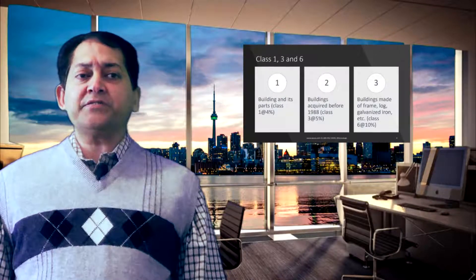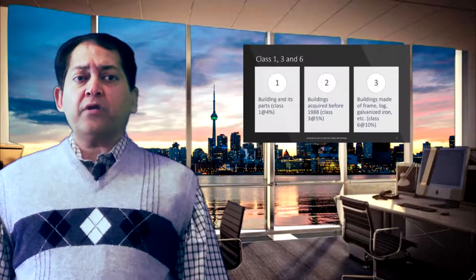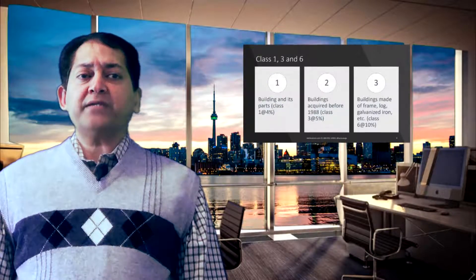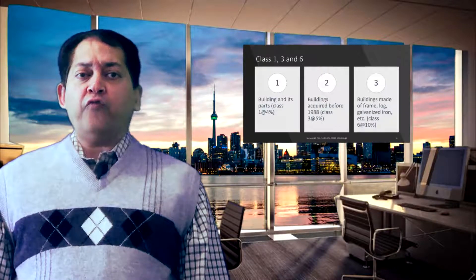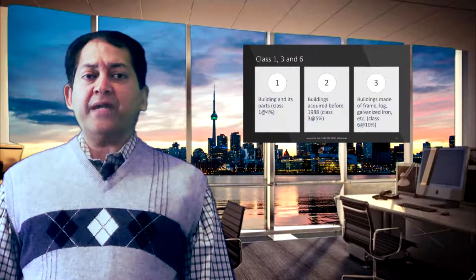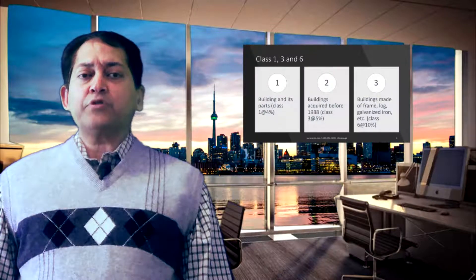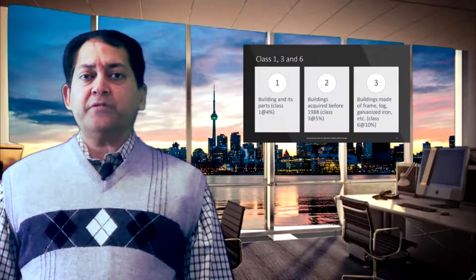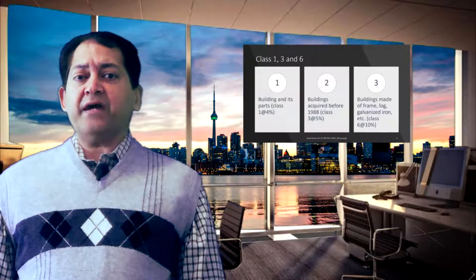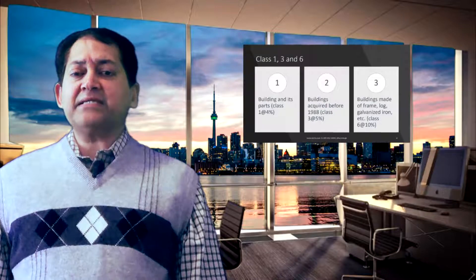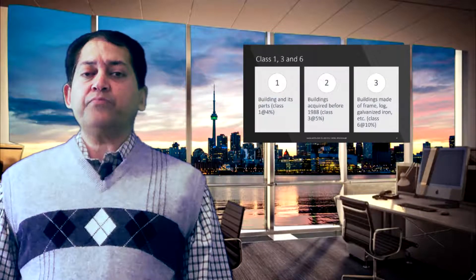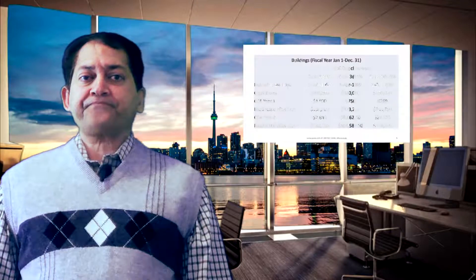These are primarily buildings. For a class 1 building, the capital cost allowance rate is 4%. For class 3 buildings, if they were acquired before 1988, the CCA rate is 5%. For buildings made of frame, log, or galvanized iron, they fall under class 6 and the capital cost allowance rate is 10% per annum.